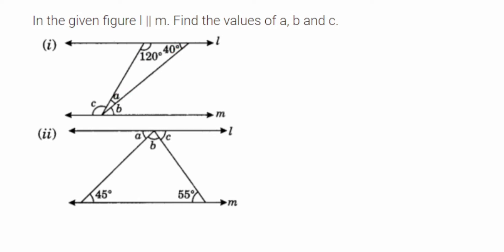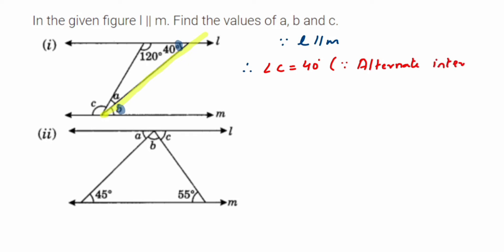We have to find a, b, c using the properties. Since l is parallel to m, this line will become a transversal. If this line is a transversal, then the angle 40 and this angle will be alternate interior angles. We know that alternate interior angles are equal, so therefore angle c is equal to 40 degrees.